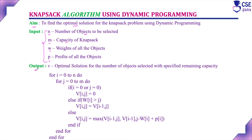The output V represents the optimal solution — the number of objects to be selected and placed into the knapsack with the specified remaining capacity, such that it does not exceed the maximum capacity of the knapsack. We have to select and place objects into the knapsack to maximize the profit without exceeding the maximum capacity. That is the optimal solution.